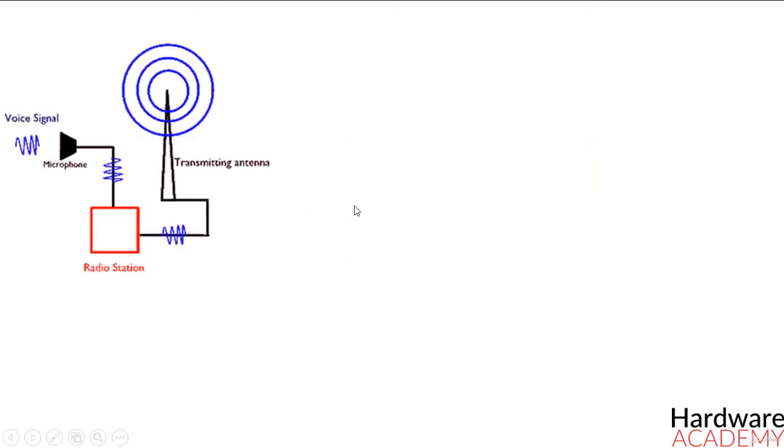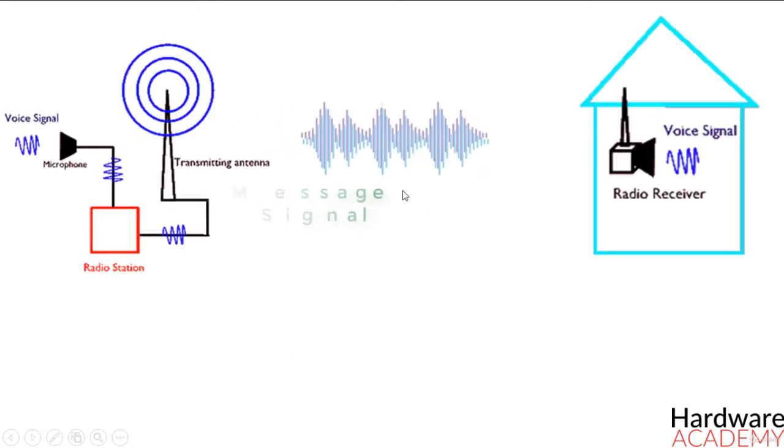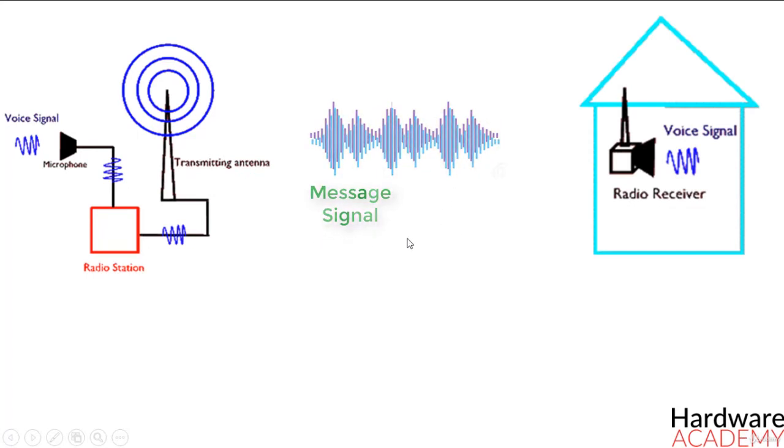A message carrying signal has to get transmitted over a distance and for it to establish a reliable communication, it needs to take the help of a high frequency signal which should not affect the original characteristics of the message signal.